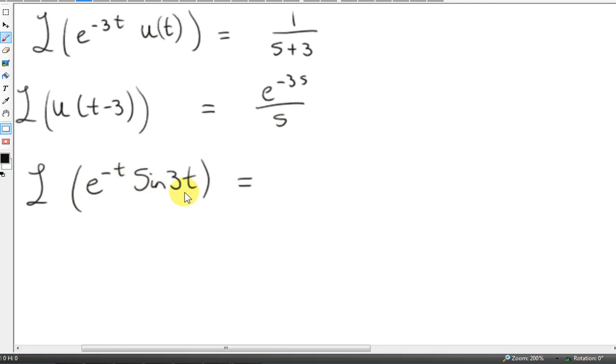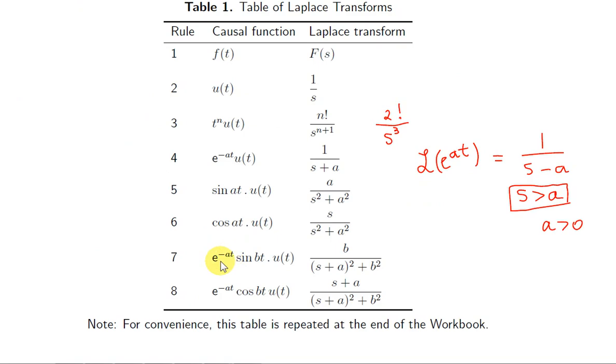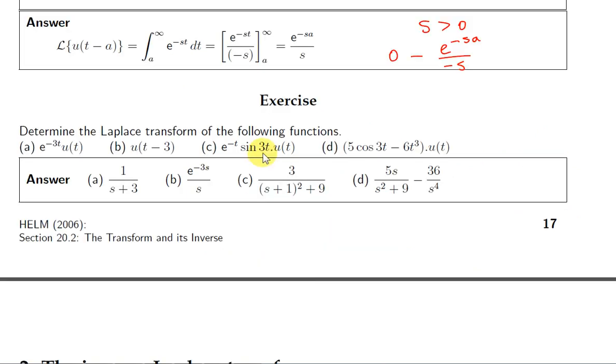Next we want L{e^(-t)sin(3t)}. Well we can go back up here to number 7. And we want e^(-t), so we want a to equal 1, and b to equal 3. Now we haven't proven this one, but here is its transform. Just plug in for a and b. So b is 3. b squared appears here. 3 squared is 9. A is 1.